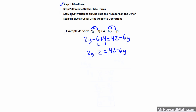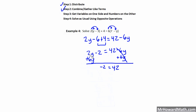Now I need to get variables on one side. To keep my variable term positive, I'm going to add 6y to both sides. Negative 6y plus 6y cancels. And 2y plus 6y is 8y. Now I need to get the minus 2 over to the right side. The opposite of subtracting 2 is to add 2. That goes away, leaving 8y on the left. And 42 plus 2 gives me 44 on the right.